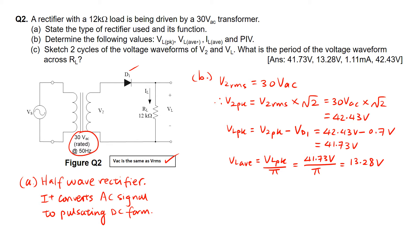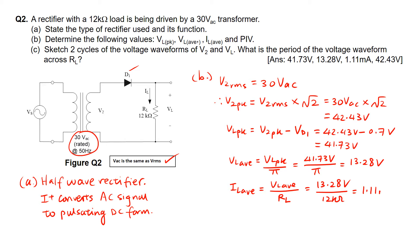To calculate IL average, we take the VL average value we just calculated and divide it by the load resistor RL. So this will be 13.28V divided by 12 kΩ. IL average is then equals to 1.11 mA.